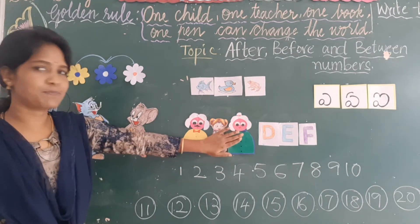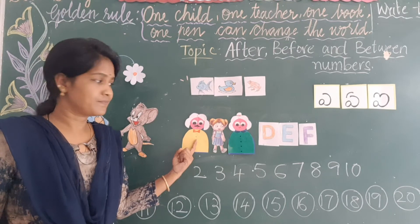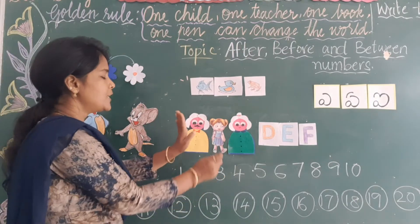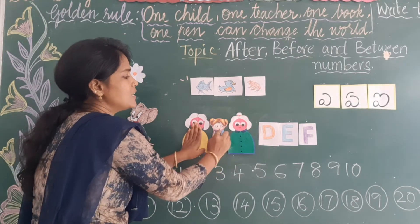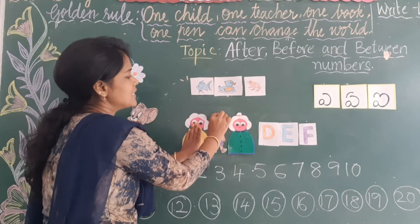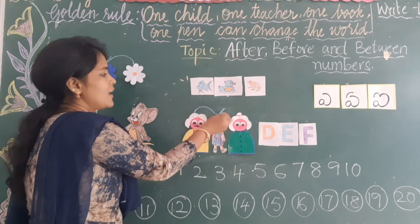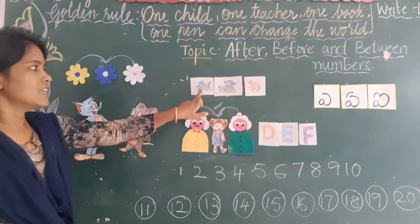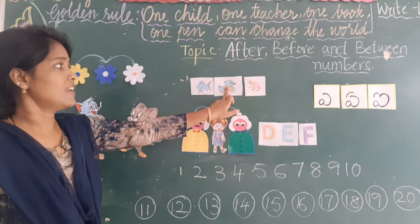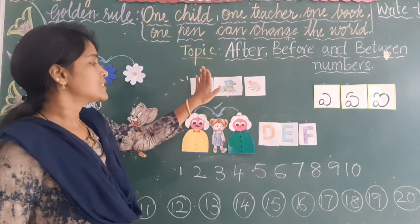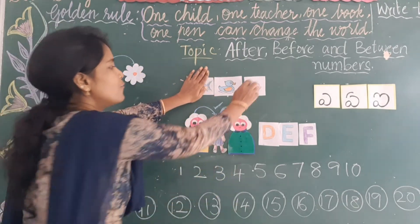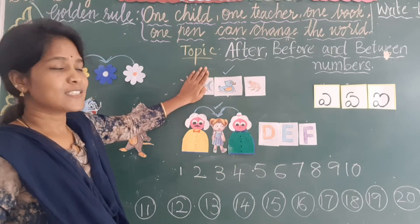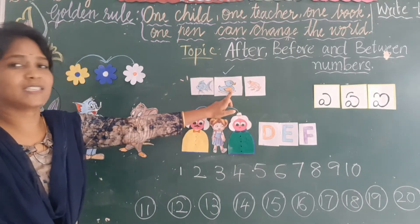Now look at these pictures — here Grandpa is there, here a girl, and after the girl you can see Grandma. Between Grandpa and Grandma, who is there? Yes, there is a girl — between Grandpa and Grandma there is a girl. Now here you can see fish, after fish duck is there, after duck frog is there. So between fish and frog, whom can you see? Yes, you can see a duck. In between fish and frog, you can see a duck.